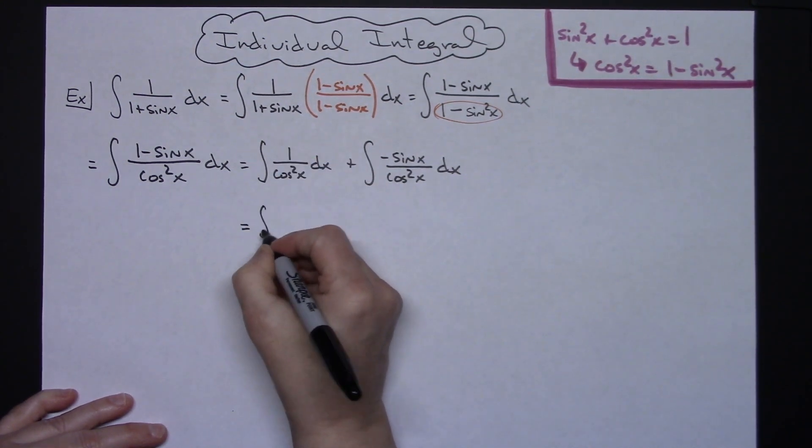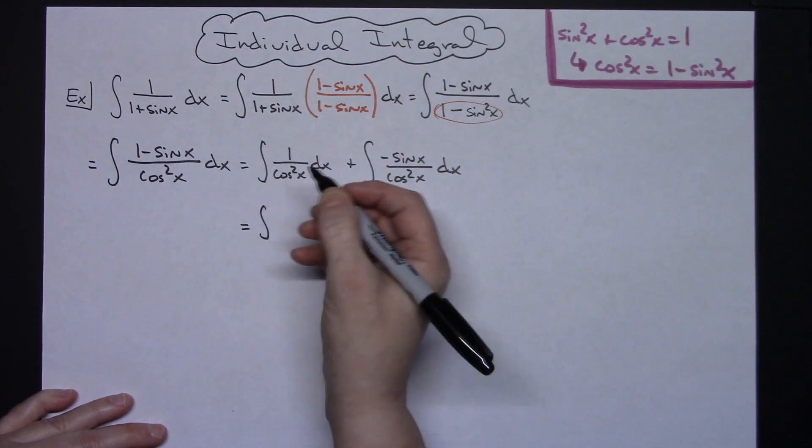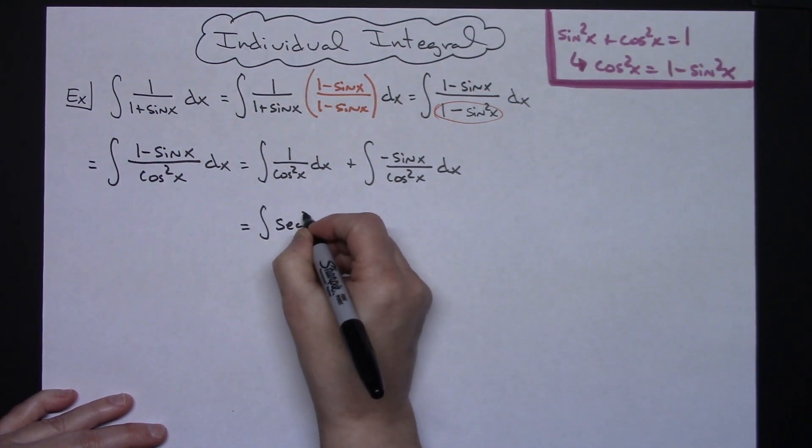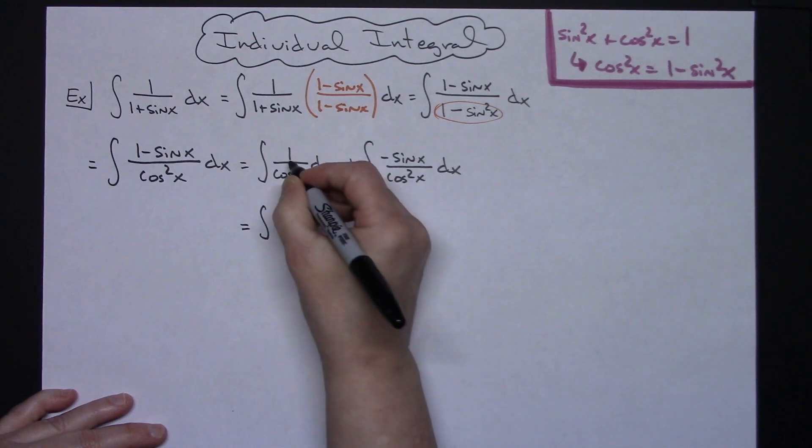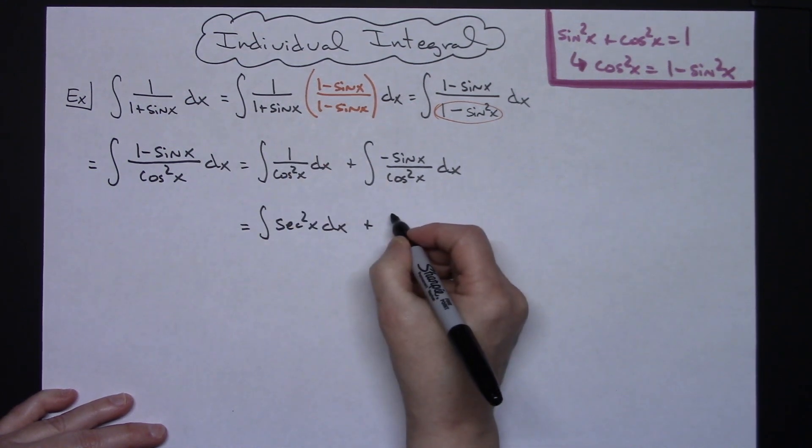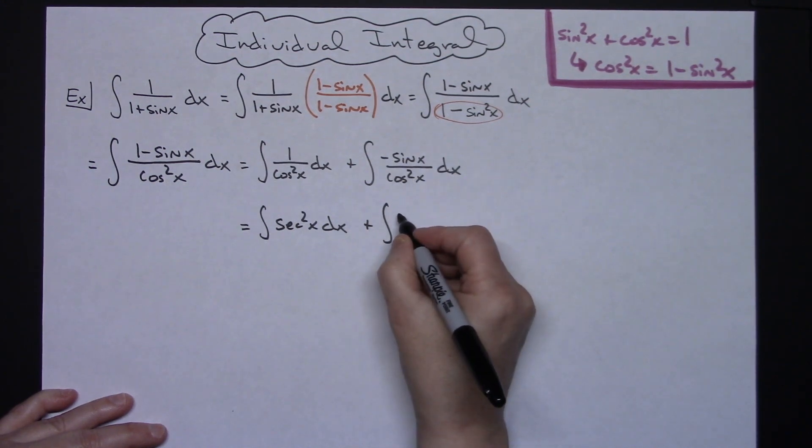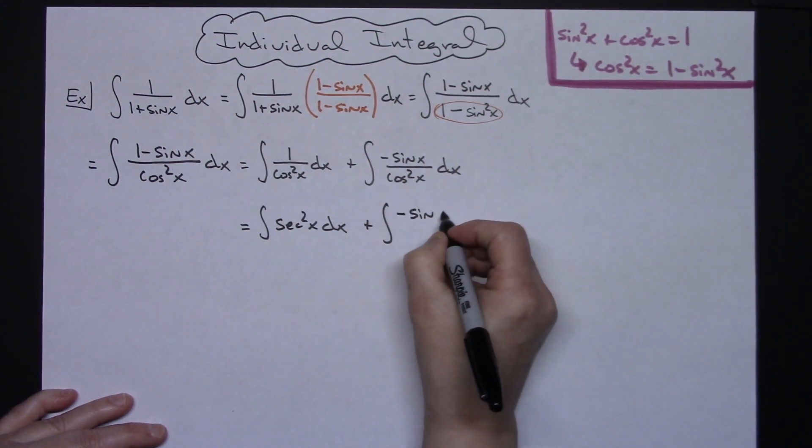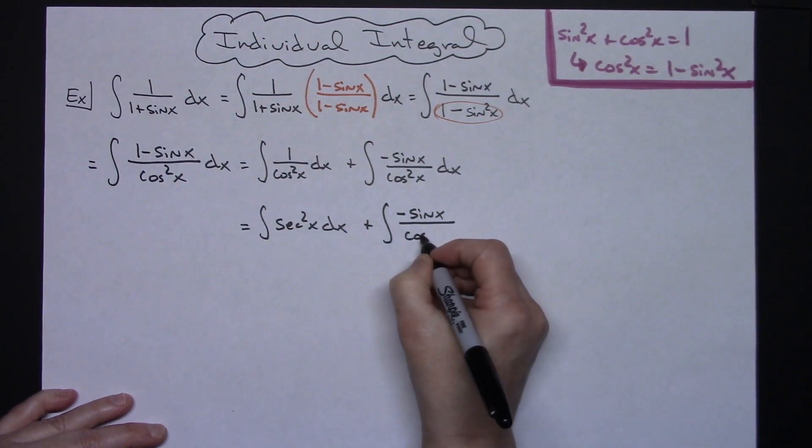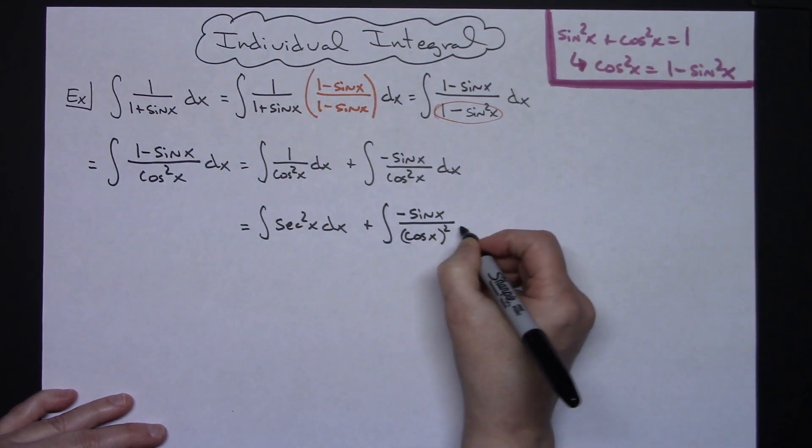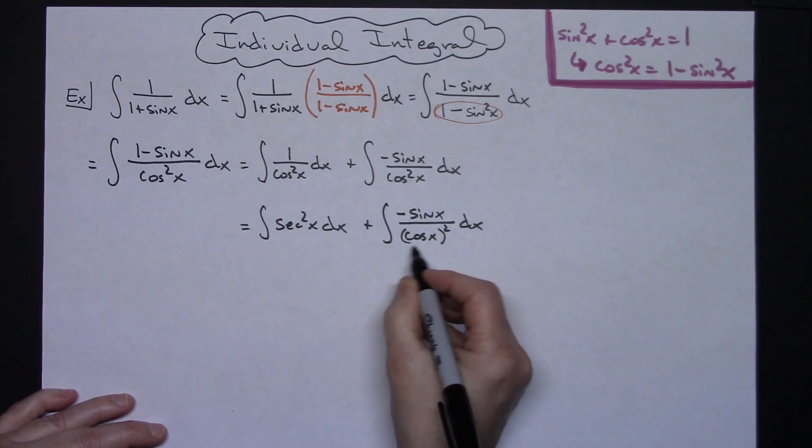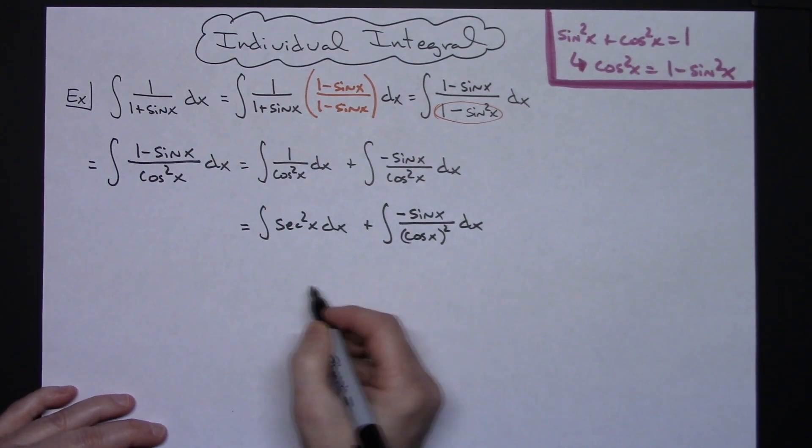So that's what I'm going to start working down here we'll replace this 1 over cosine squared it's going to be a secant squared x dx doing that reciprocal identity there. And then over here the only thing I want to do is I want to rewrite this so that we can see what the inside function is so minus sine x all over a cosine x and then quantity squared doing that just so you can see what the inside is right there.